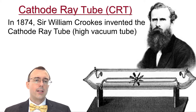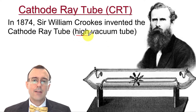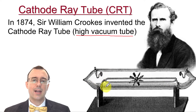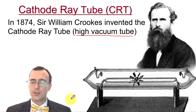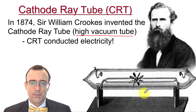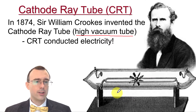Further on, as people continued to investigate the atom, in 1874 Sir William Crookes invented the cathode ray tube — a high vacuum tube where he took a glass tube, empty in the middle, and sucked out all of the air. He did some interesting experiments and found that these cathode ray tubes conducted electricity, whereas if you had air in there it wouldn't conduct electricity very well. But when you remove the air, they could actually conduct electricity.